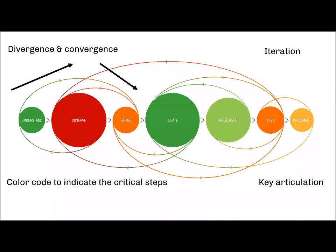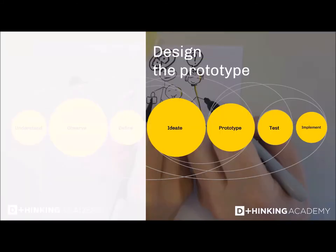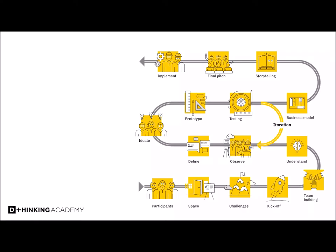There is a key articulation before developing the value proposition and before producing. You really have two main steps: defining the problem — which is highly critical, as Einstein said, 55 minutes defining the problem and five minutes finding the solution — and then solving it. I'll show you the different steps with associated tools. The first step is 'Understand.'